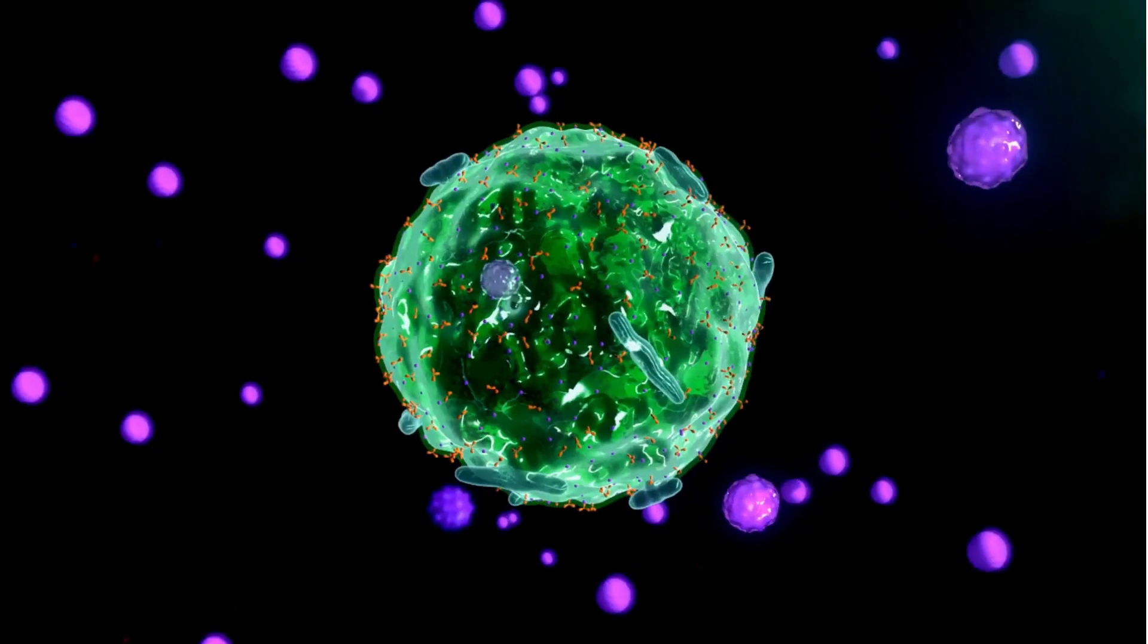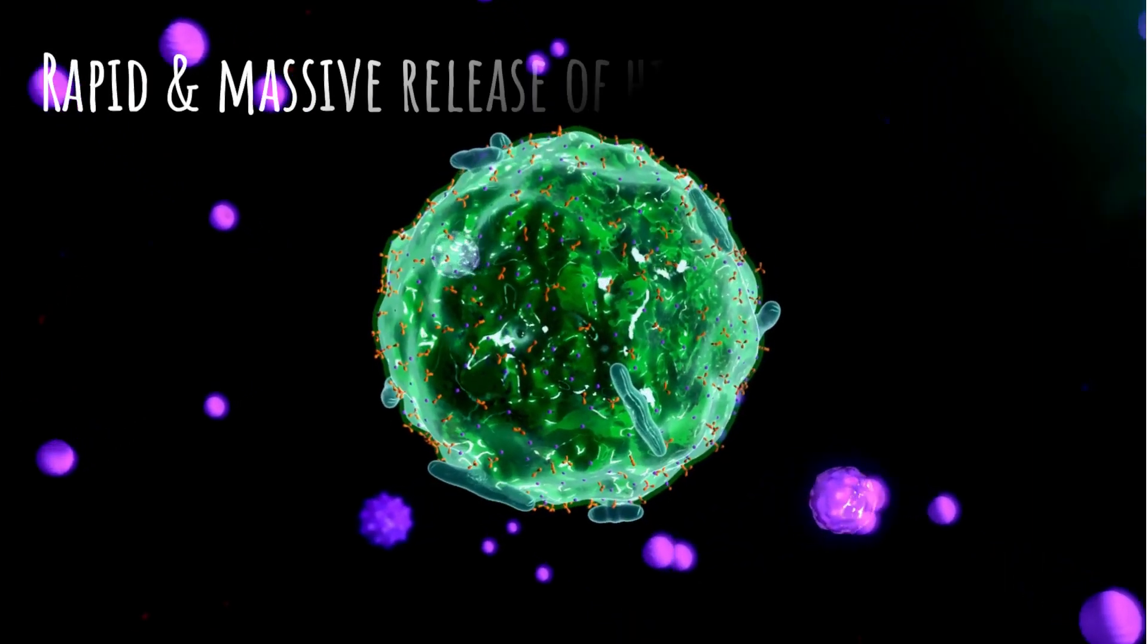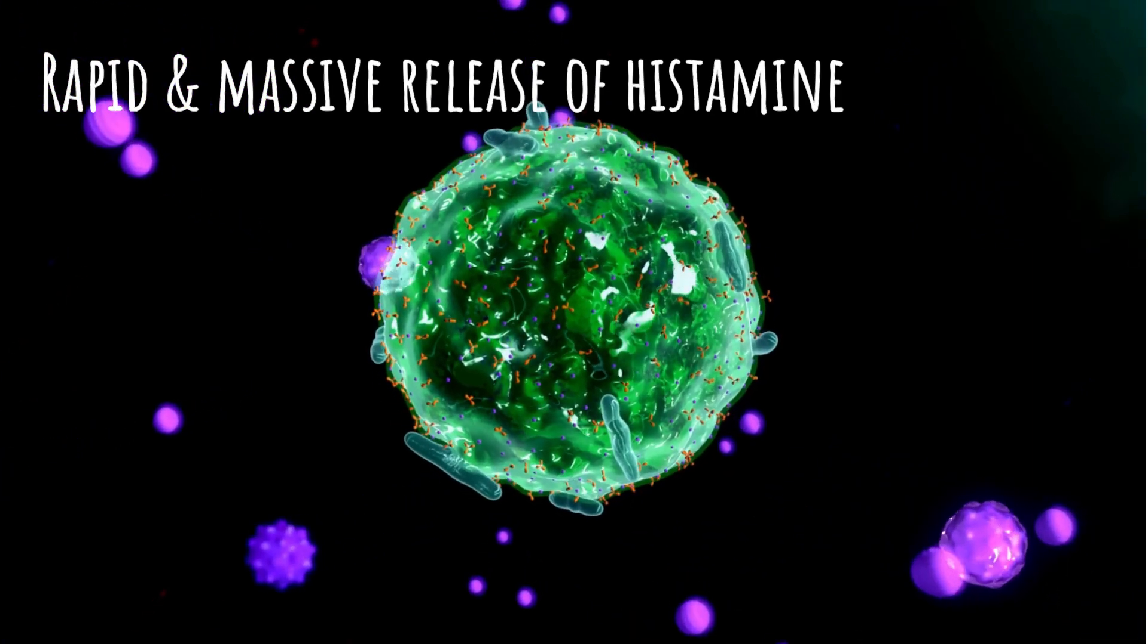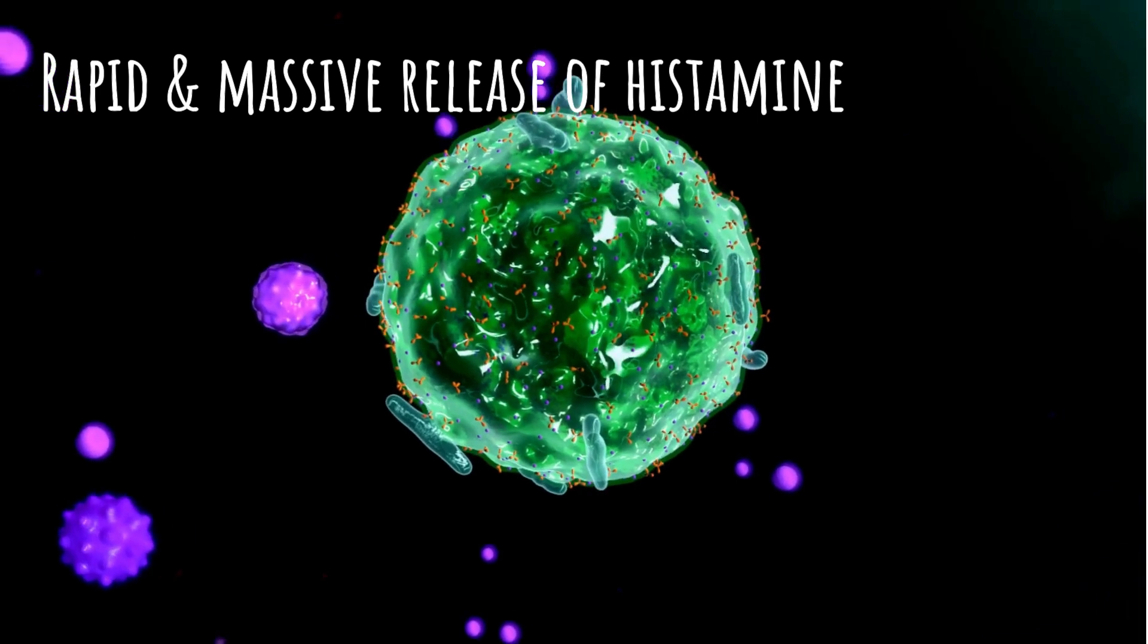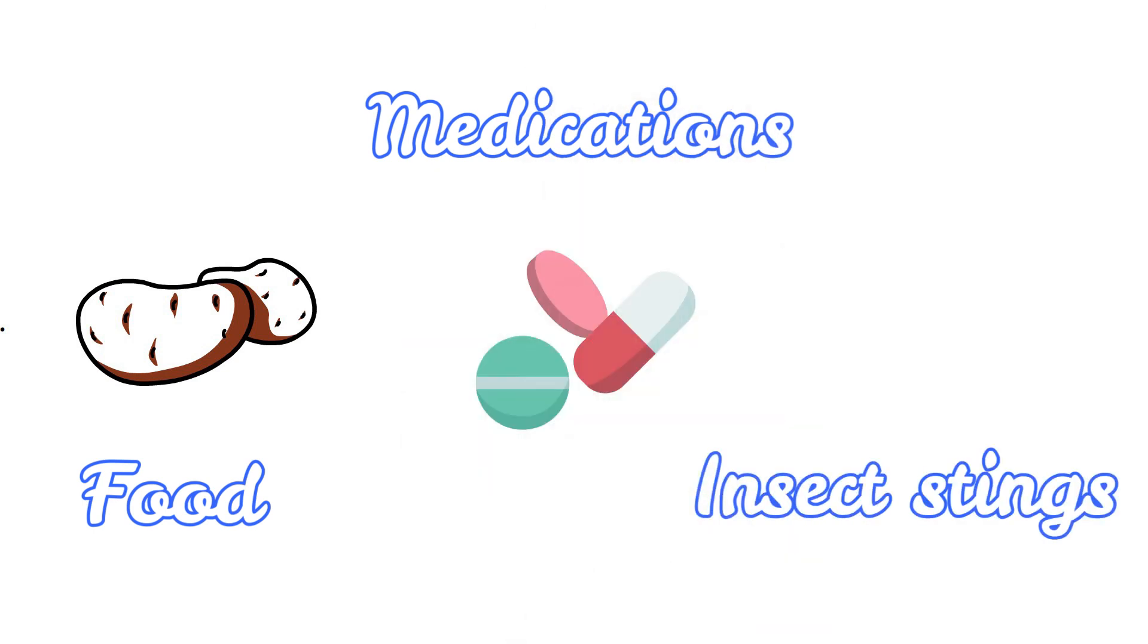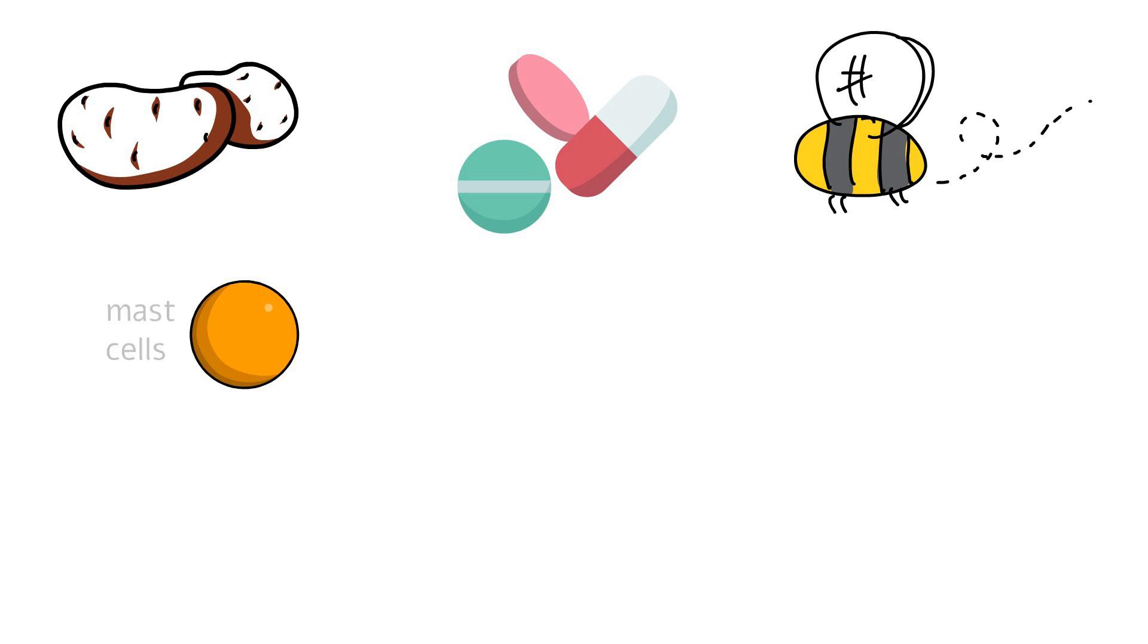It's characterized by a rapid and massive release of histamine and other immune mediators and it occurs when you're exposed to an allergen like food, medication, and insect stings. But any substance that is capable of inducing a systemic degranulation of mast cells and basophils can cause anaphylaxis.